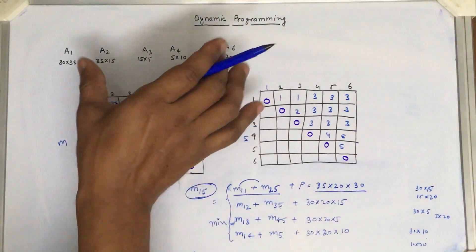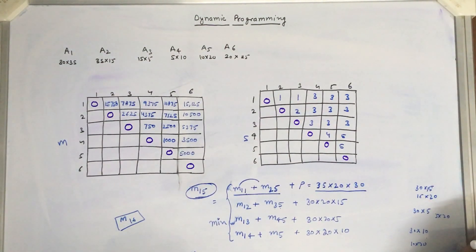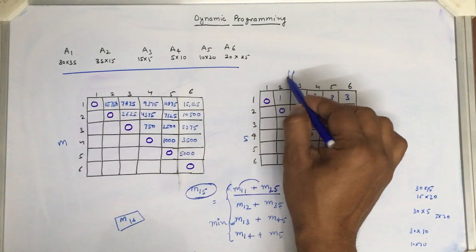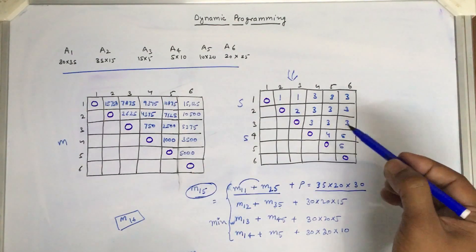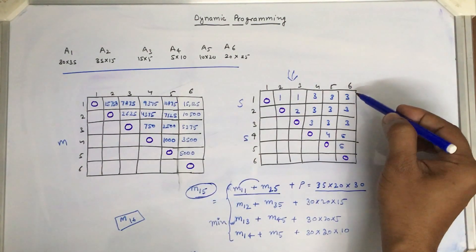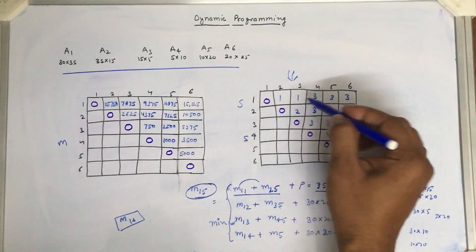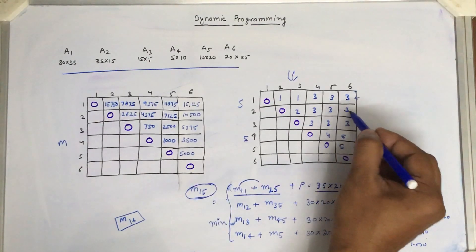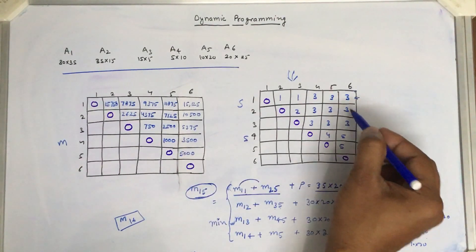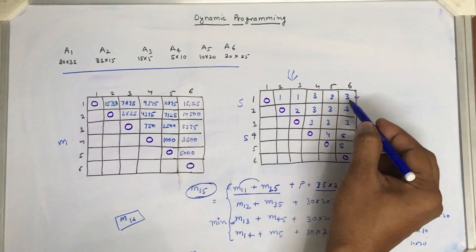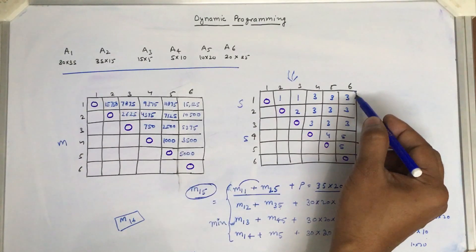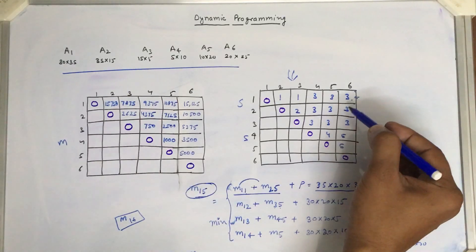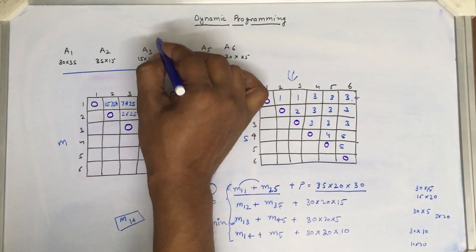Now, how do we read the solution matrix in order to parenthesize the given matrices optimally? This is the problem and this is the final solution matrix. To read it, go to the topmost level — if we rotate this matrix, the top diagonal is the topmost level, the second diagonal is the second level, and so on. This is the topmost problem with six elements.